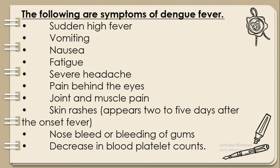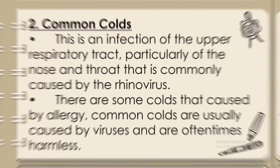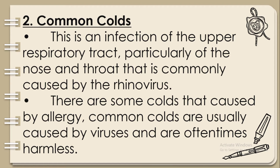The following are symptoms of dengue fever: sudden high fever, vomiting, nausea, fatigue, severe headache, pain behind the eyes, joint and muscle pain, skin rashes that appear two to five days after the onset of fever, nosebleed or bleeding of gums, and decrease in blood platelet counts.